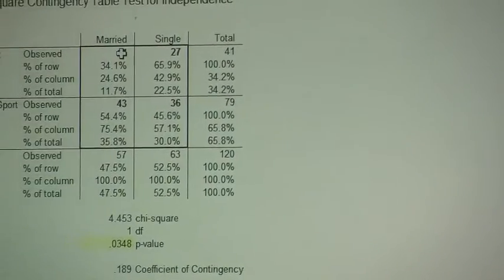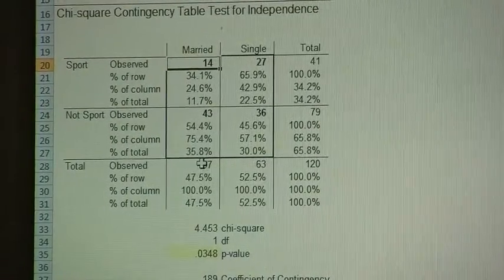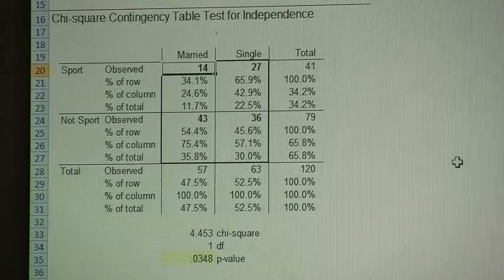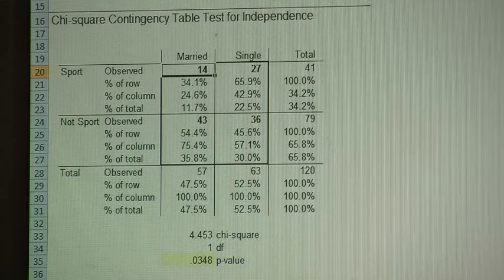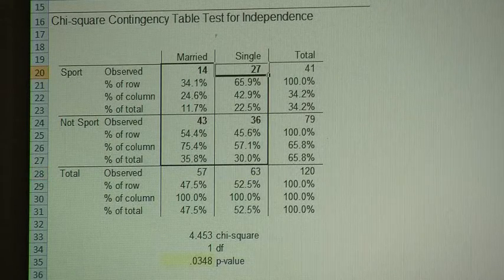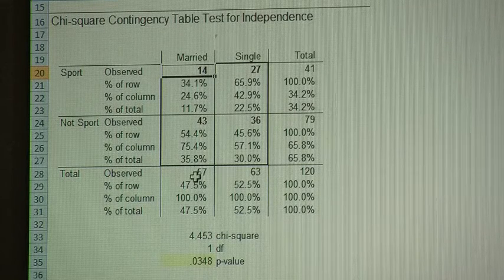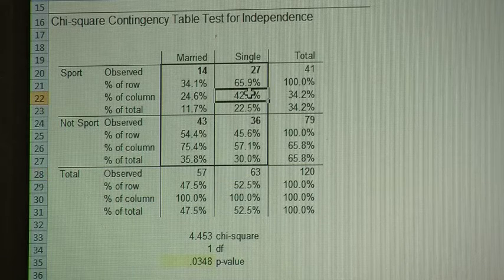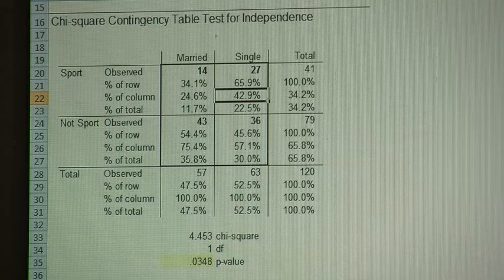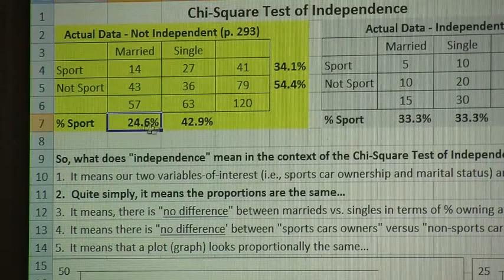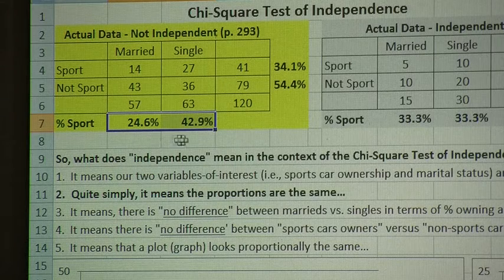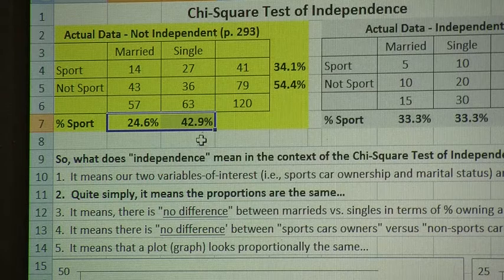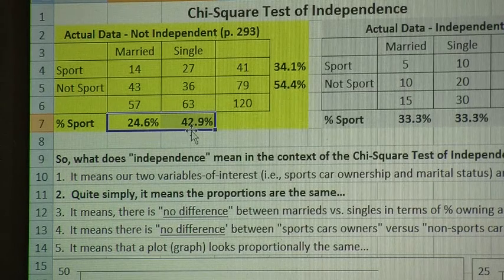Now I can see that 14 of the 57 married people own a sports car, and 27 of the 63 single people own a sports car. So 14 divided by 57 gives me a percent of column of 25%, and 27 divided by 63 equals 42.9%. These are the two numbers we use to ascertain that single people are much more likely than married people to own a sports car — in fact, single people are almost twice as likely to own a sports car as married people.